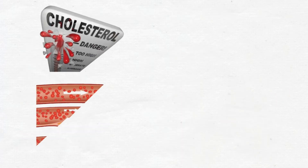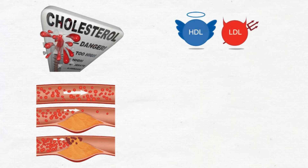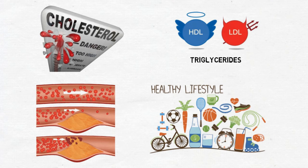Cholesterol is a fatty substance found in your blood that is needed by your body to make hormones and vitamin D. There are two main types of cholesterol. HDL, also called good cholesterol, helps keep cholesterol from building up in the arteries — think of H indicating high, as we want a good level of this. LDL, also called bad cholesterol, is a major cause of cholesterol build-up and narrowing of the coronary arteries — think of L indicating low, as we want a low level of this. Triglycerides is another type of fat in the blood that can also increase the risk of heart disease, and high triglycerides can be associated with low HDL levels.